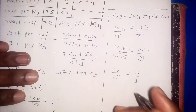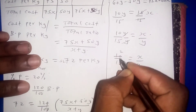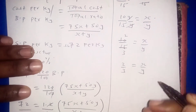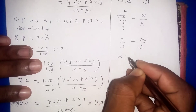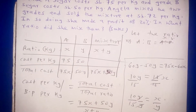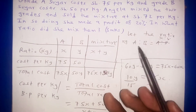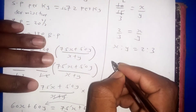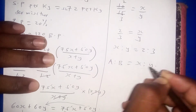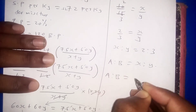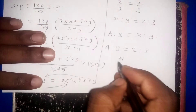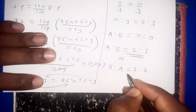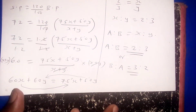Simplifying 10/15 to its simplest form: 5 goes into 10 twice and into 15 three times, giving 2/3 = x/y. Therefore x to y equals 2 to 3. Since we let the ratio of Grade A to Grade B be x to y, the ratio of A to B is 2 to 3. Alternatively, the ratio of B to A is 3 to 2.